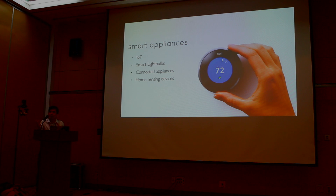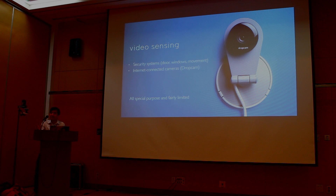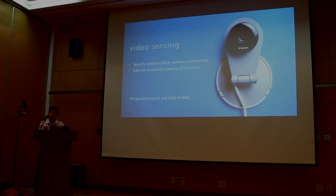We're starting to see smarter appliances that can infer high-level things off of these basic sensors. But even still, these are fairly special purpose. For example, the Nest is a smart appliance, but it still only controls the temperature in your house. We're also seeing the emergence of video sensing in the home, like drop cams. But all of these provide a video stream that doesn't really give you actionable sensor data beyond just movement or occupancy, which is again pretty basic.